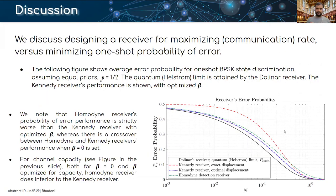We discuss designing a receiver for maximizing communication rate versus minimizing one-shot probability of error. The following figure shows an average error probability for one-shot BPSK discrimination with an equal prior.